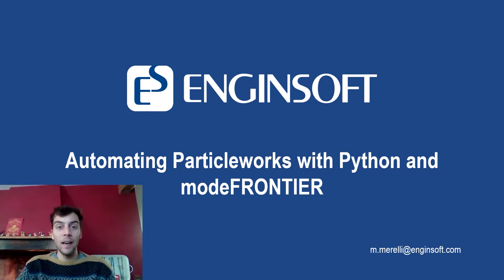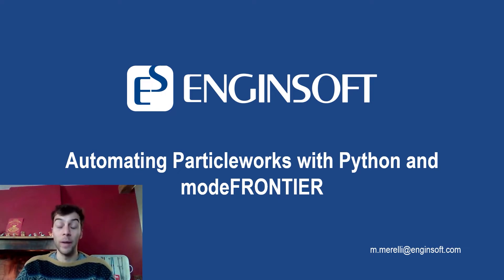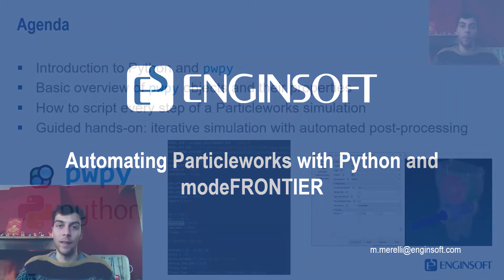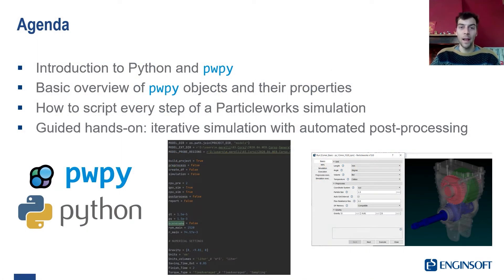Good morning everyone. I'm Michele Marelli and today I will guide you through the use of ParticleWorks and ModFrontier to optimize a forced lubrication system. In this example, we will show you how you can use the PVPy Python API, designed for controlling ParticleWorks simulations, to automate the simulation launch and preprocessing, and also to extract interesting features of the system in order to optimize the system itself.